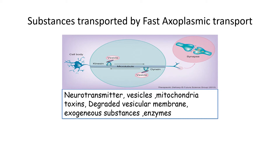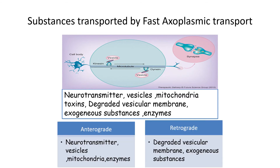In the retrograde direction, after a neurotransmitter has been released, the remaining recycled synaptic vesicles — along with certain enzymes and exogenous substances such as tetanus toxoid or neurotropic viruses like herpes or rabies — travel from the periphery back to the cell body. These recycled substances are returned to the soma for lysosomal degradation.